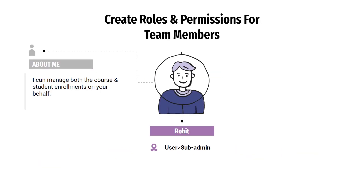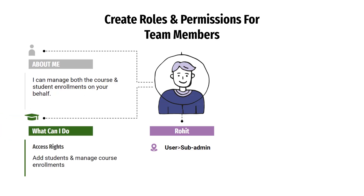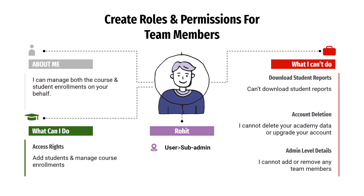Wouldn't it be great if you could delegate Rohit from your team to add students to your online course? Rohit can add students and manage student enrollments to your course on your behalf. You just don't delegate the tasks but you can create specific roles and permissions to your team members. In this case, Rohit will be able to add students and manage enrollments, while other details like downloading student reports and accessing account level and admin level details will be hidden from him.